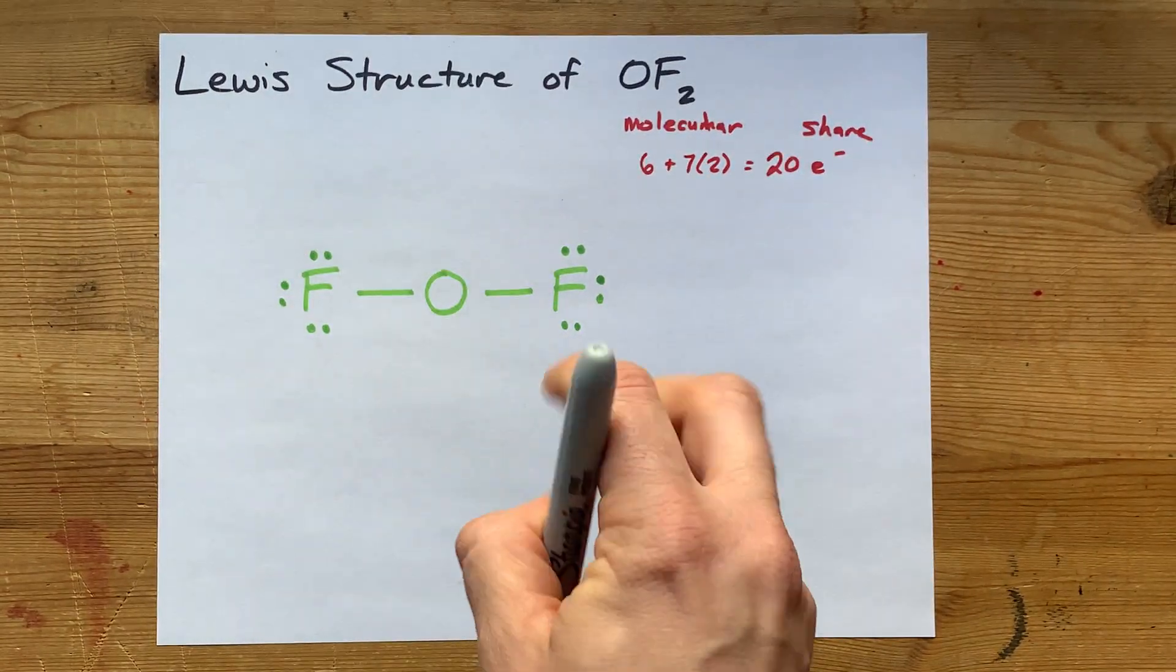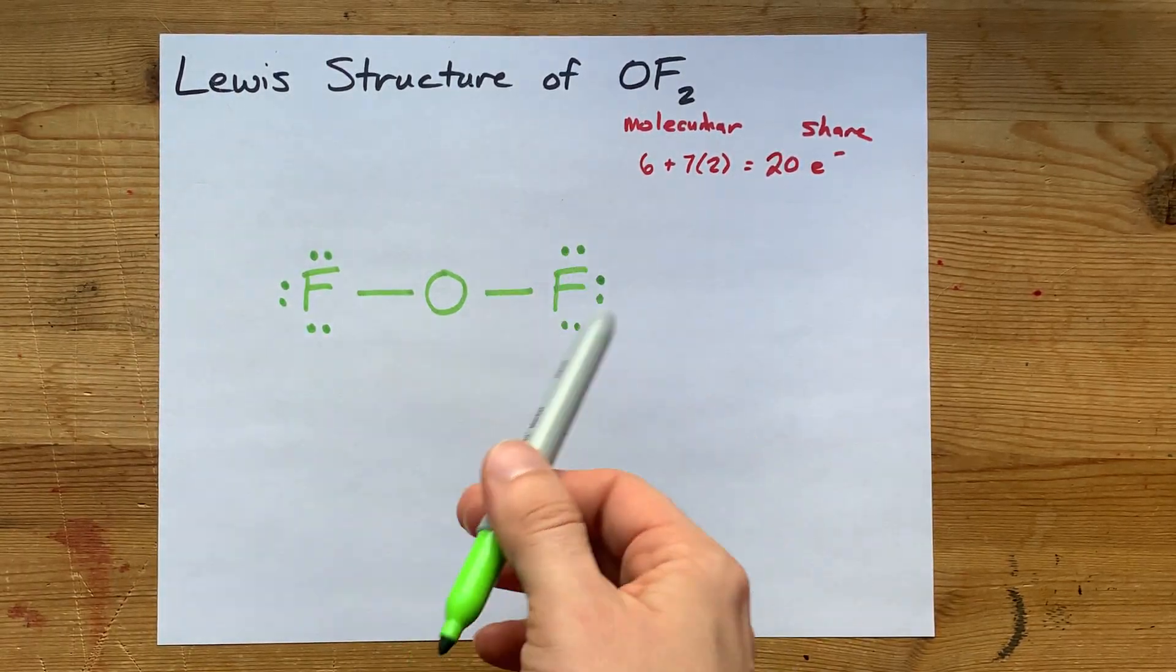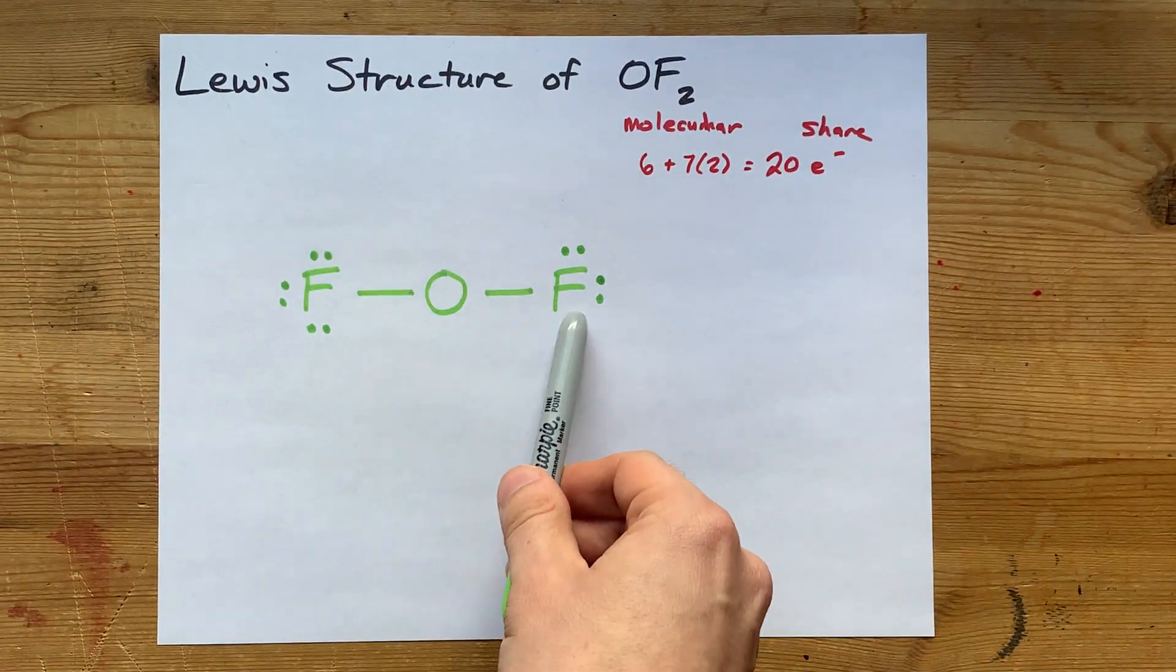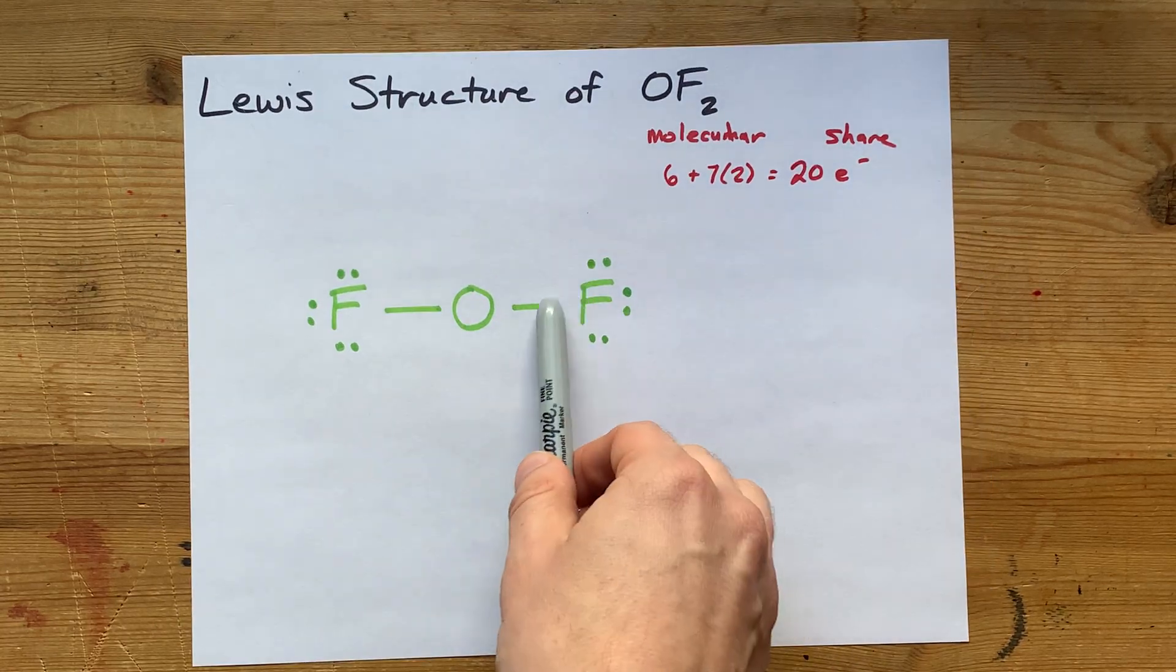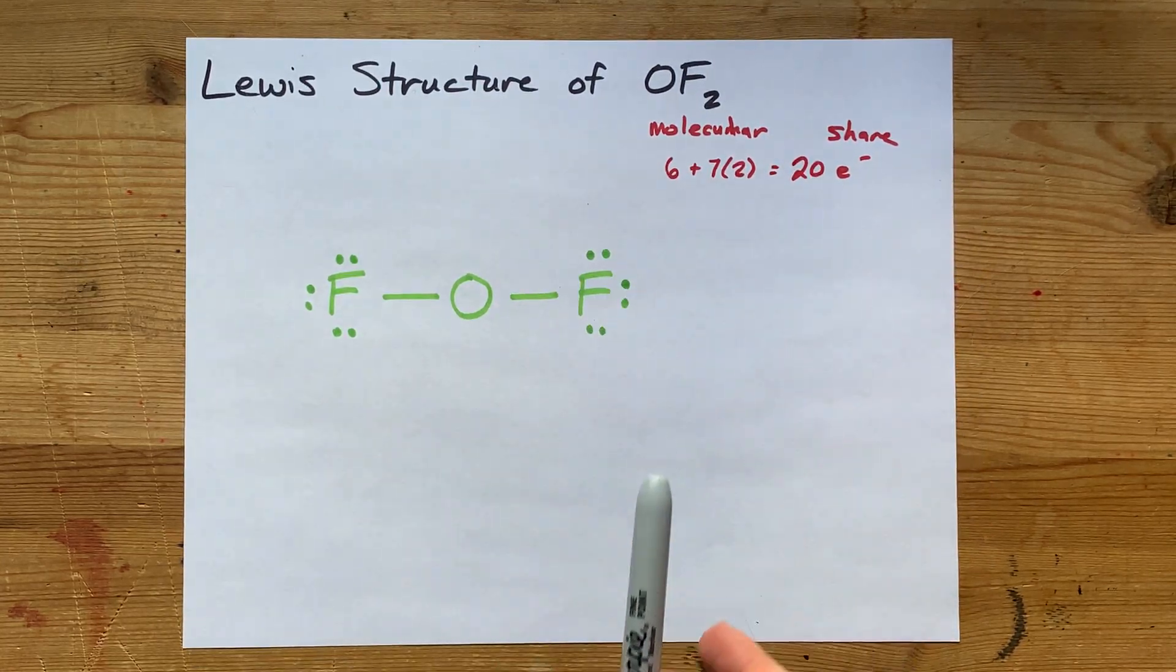Remember that the octet rule means each of the nonmetals wants eight electrons in its valence shell to be happy and stable. This fluorine now has six in lone pairs, but also this two in the bond around it. So it has eight and is happy and stable.